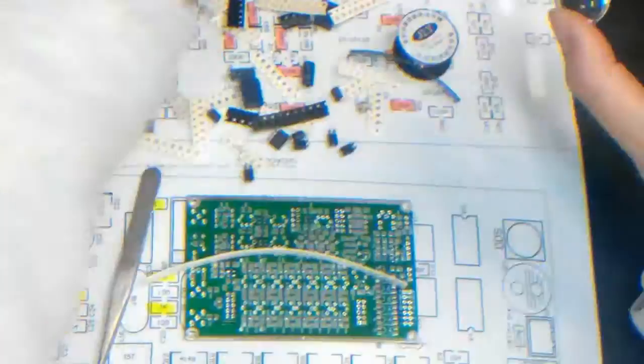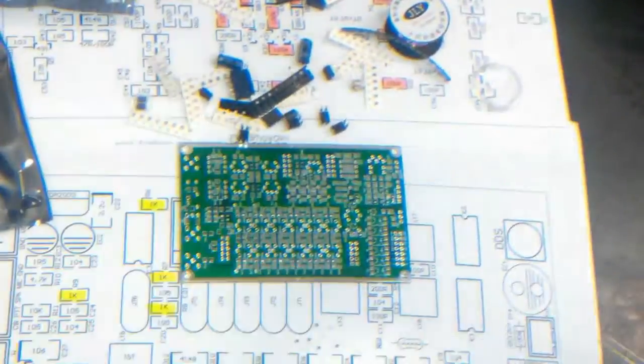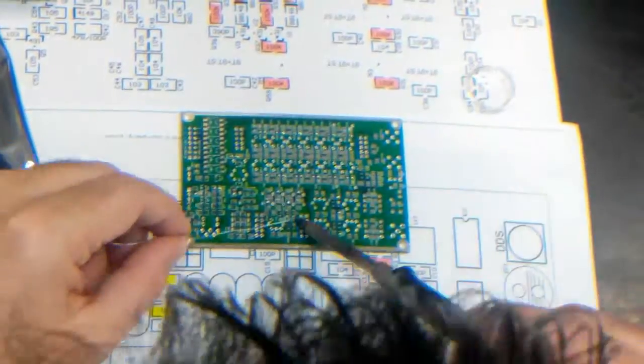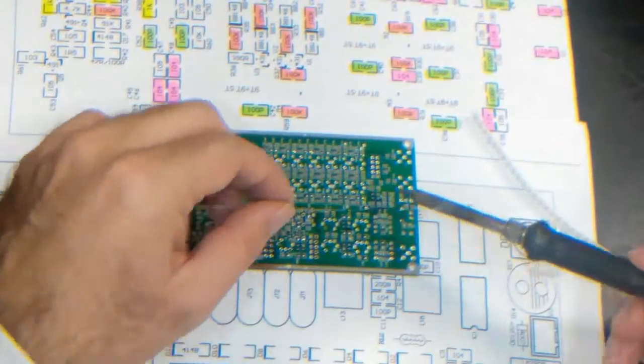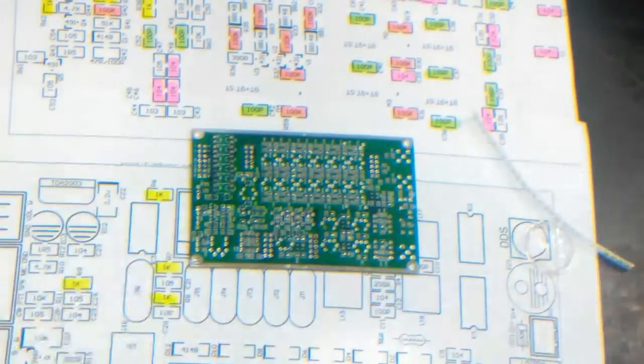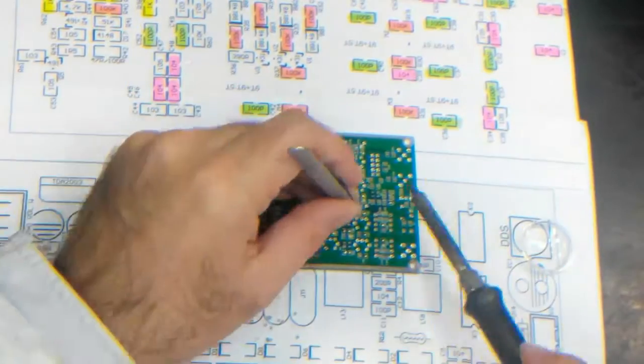Start assembly from small components, such as SMD resistors, then capacitors. Complete one side first, then the other.